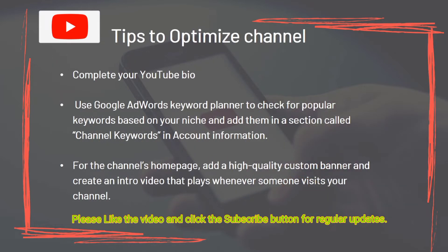Tips to optimize your channel: Complete your YouTube bio. Use Google AdWords Keyword Planner to check for popular keywords based on your niche and add them in the Channel Keywords and Account Information section. For the channel's homepage, add a high-quality custom banner and create an intro video that plays whenever someone visits your channel.